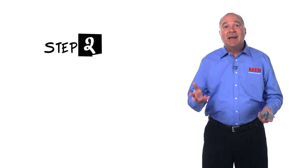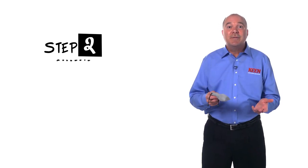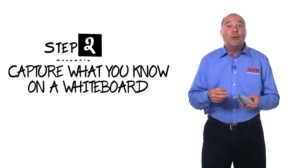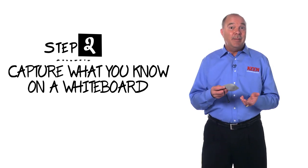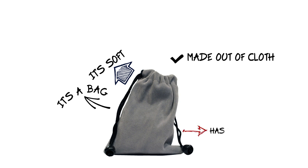The second step in the bisociation process is for the facilitator to introduce the stimulus and get the group to focus on everything we know about or are reminded of by the stimulus, and we capture all this on a whiteboard. So here's what the list looks like. It's a bag, it's soft, it's made out of cloth, it has drawstrings, it's gray and it's black.